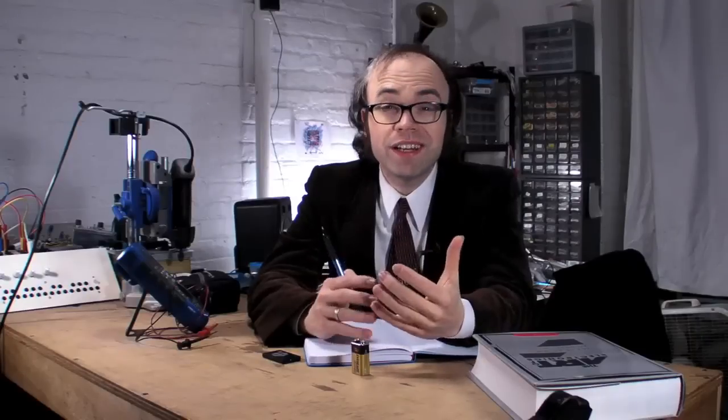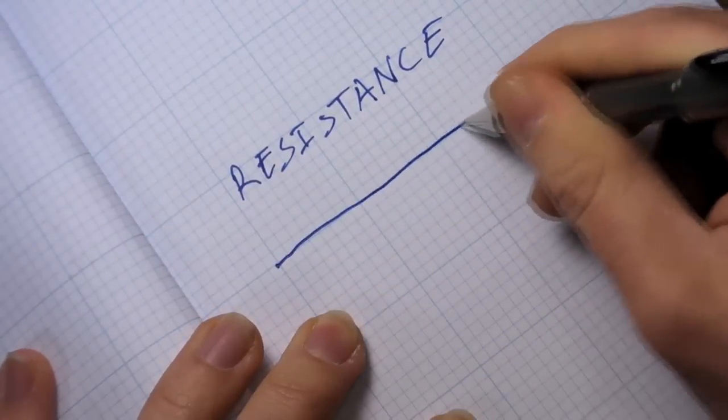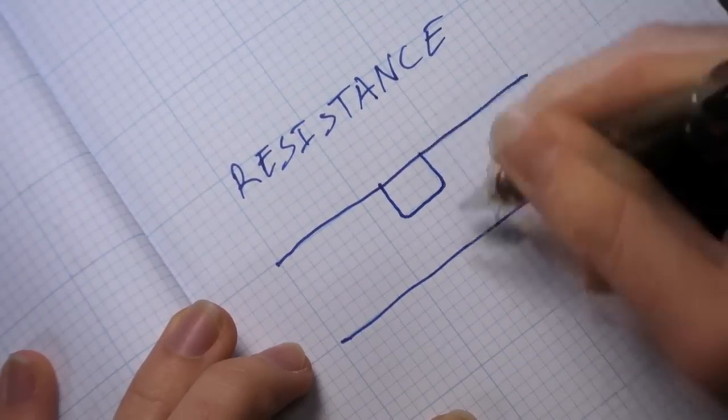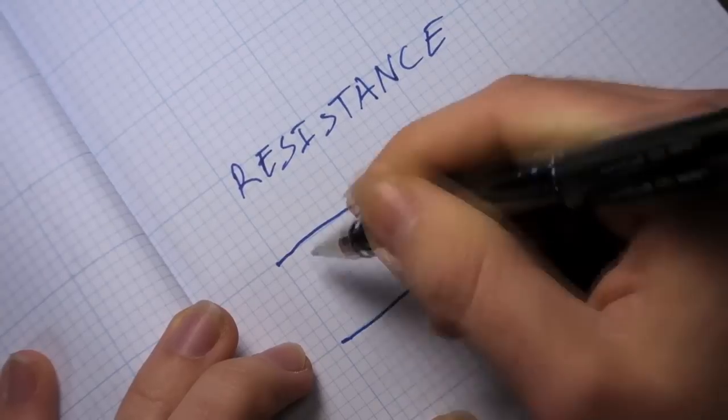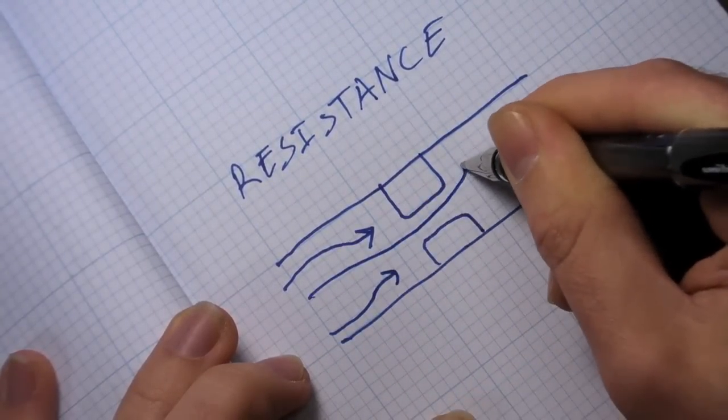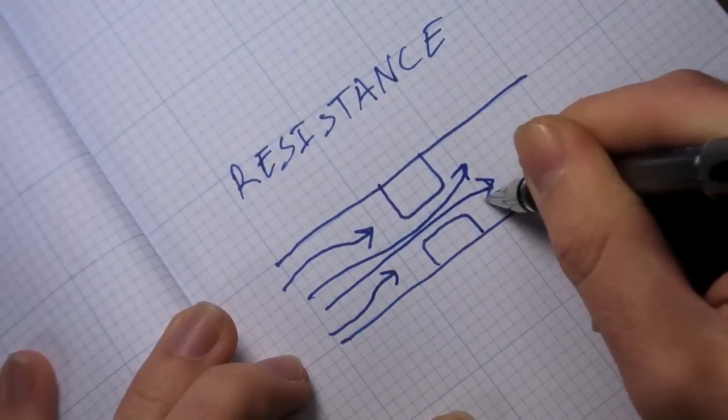And finally, resistance measures an object's opposition to the flow of electricity. It's a bit like a narrowing in our pipe that would cause a change in current.